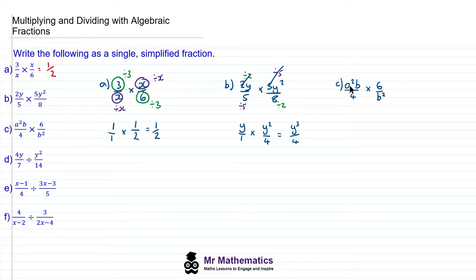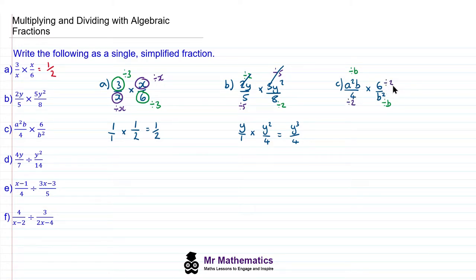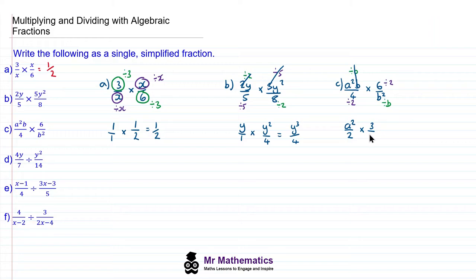For question C, we can see a common factor of this numerator and its denominator is b, so we can divide both by b. Moving on to the other pair, the highest common factor of 6 and 4 is 2, so we'll divide each by 2. Now we can rewrite the product: b divided by b will cancel to make 1, leaving a squared; 4 divided by 2 will make 2; multiplied by 6 divided by 2, which is 3; and b squared divided by b is b. So this becomes 3a squared over 2b.